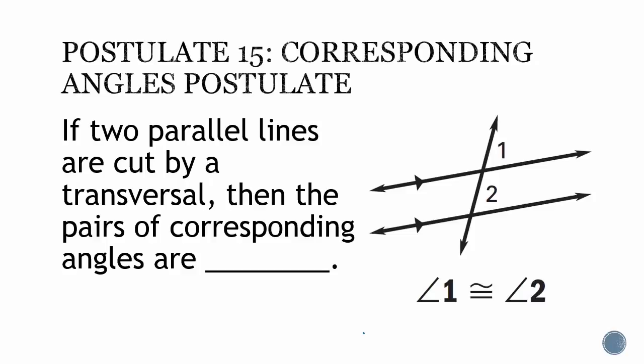Postulate 15, corresponding angle postulate. If two parallel lines are cut by a transversal, then the pair of corresponding angles are congruent. If I were to draw my box around these angles, notice that angle 1 and angle 2 take the same spot within the boxes, so these two angles are corresponding and they have the same measure because they are congruent.